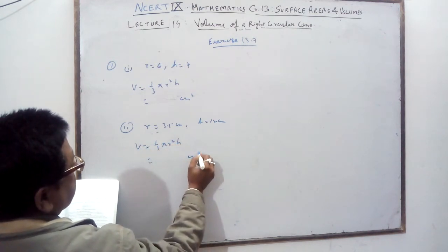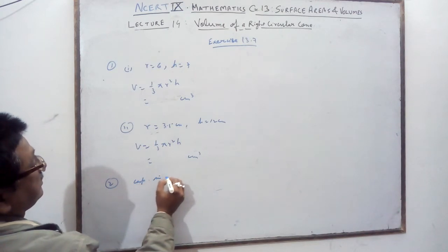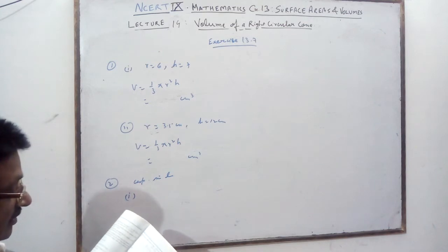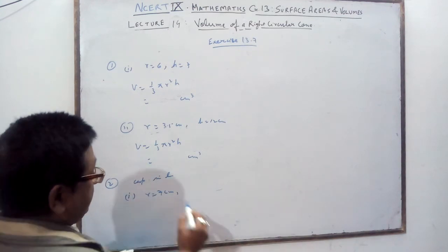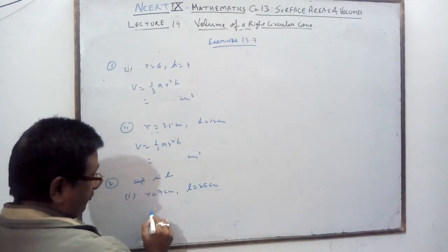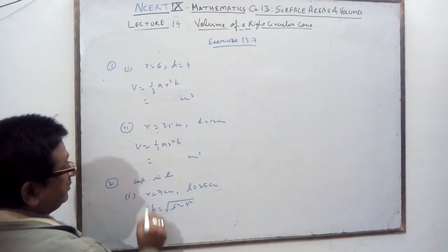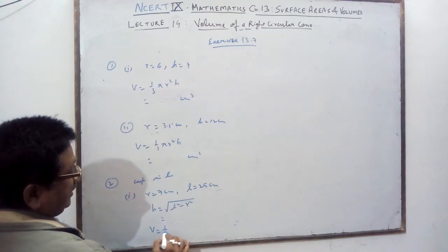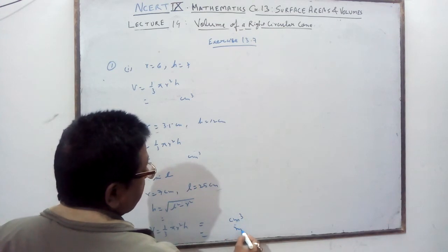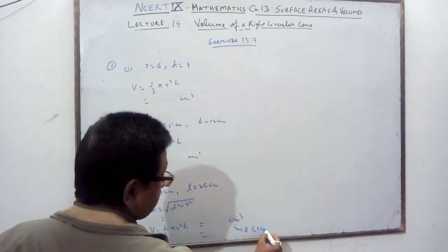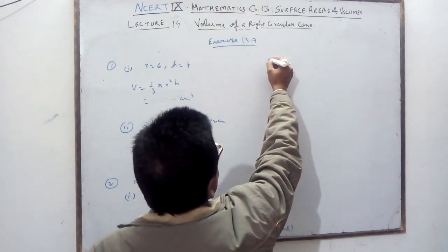Question 2: find the capacity in liters. First part: radius = 7 cm, slant height = 25 cm. First find h using h² = l² - r², then calculate volume = (1/3)πr²h to get the answer in cubic centimeters, which equals milliliters. Then divide by 1000 to convert to liters.